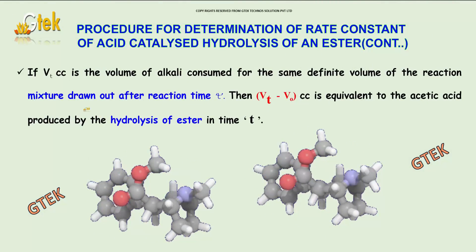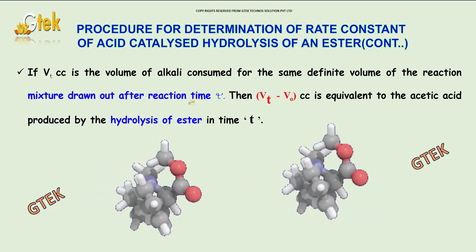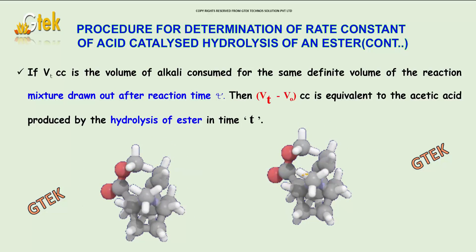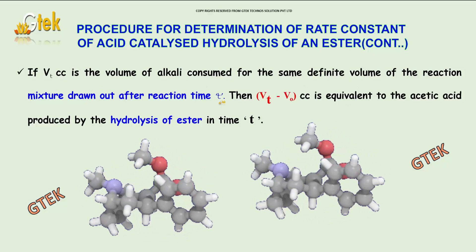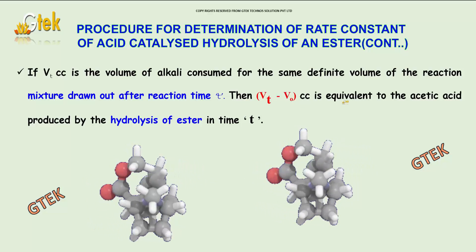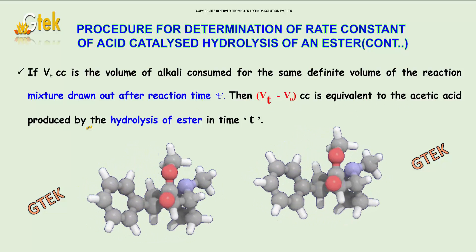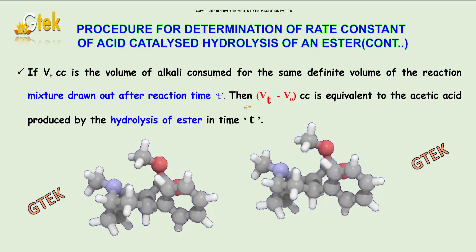If Vₜ cc is the volume of alkali consumed for the same definite volume of the reaction mixture of ester at time t, then Vₜ - V₀ is equivalent to the acetic acid produced by the hydrolysis of ester in time t.